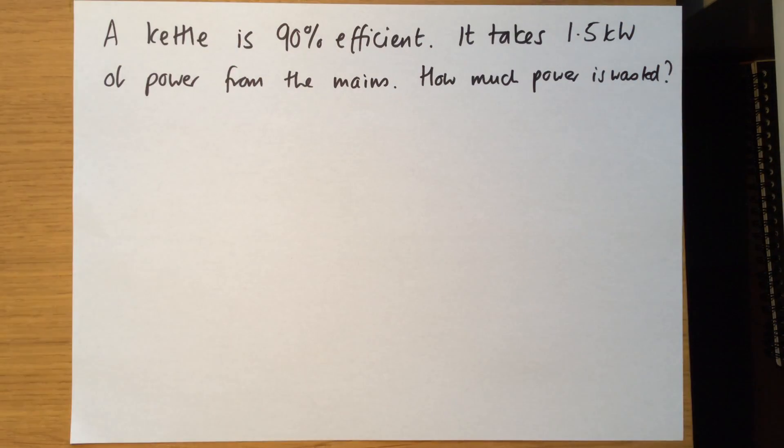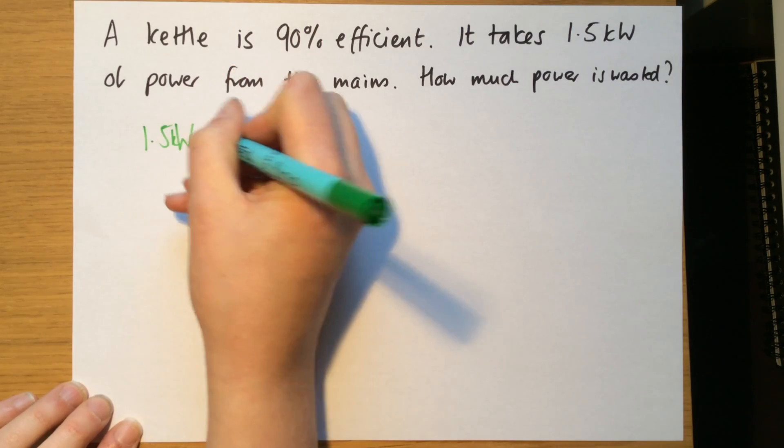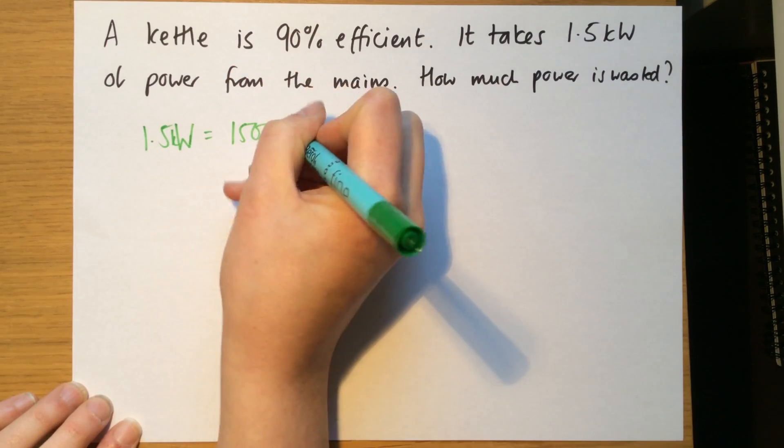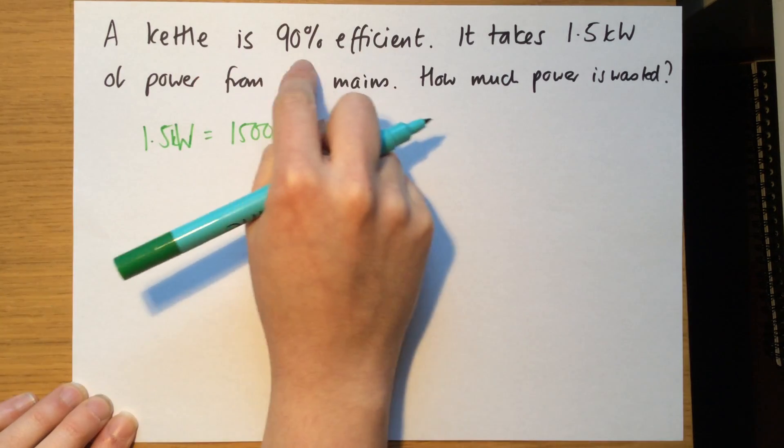Now, let's have a look at this question here. A kettle is 90% efficient. It takes 1.5 kilowatts of power from the mains. How much power is wasted? So remember that 1.5 kilowatts is just equal to 1,500 watts. Remember, a kilowatt is 1,000 watts. And the kettle is 90% efficient.